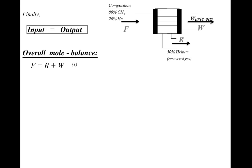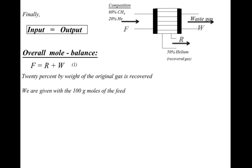We have F equal to 100 kg moles. We are told 20% by weight of the original gas is recovered. To find the recovered mass, we need to first calculate the total feed mass. The feed contains methane and helium, so we calculate each component's mass contribution.